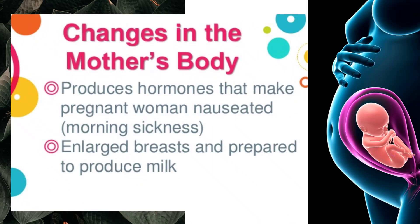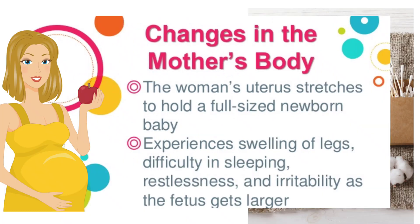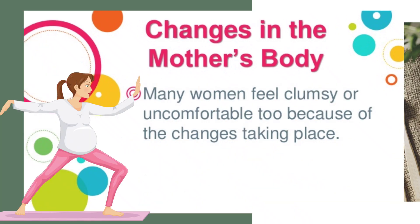Changes in the mother's body: the body produces hormones that make the pregnant woman nauseated, known as morning sickness. The breasts enlarge and prepare to produce milk. The woman's uterus stretches to hold a full-sized newborn baby. She may also experience swelling of the legs, difficulty in sleeping, restlessness, and irritability as the fetus gets larger.